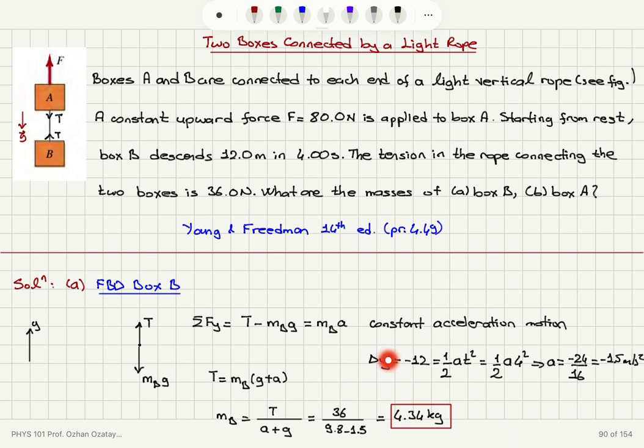And since I have constant acceleration motion, the change in the position on the y-axis, that's the displacement, delta y is minus 12, because it's descending, it's 1/2 at squared. I find that acceleration is minus 1.5 meters per second squared. So minus indicates that it's in the minus j hat direction. And the tension is therefore equal to mass of box B times g plus a. So tension divided by a plus g gives me the mass of box B.